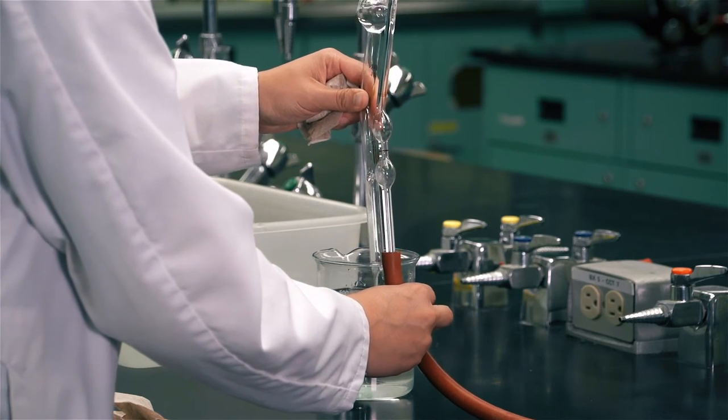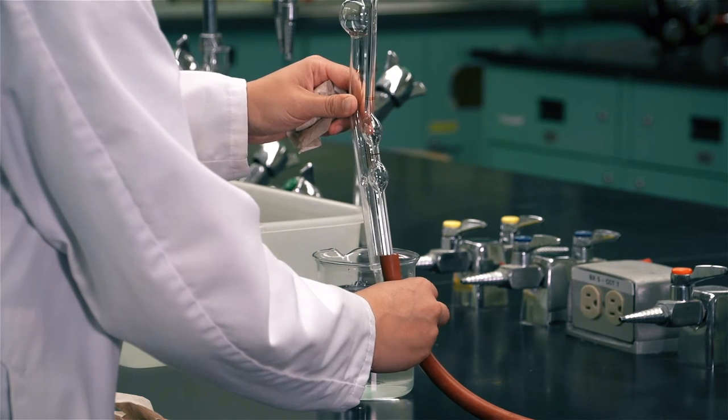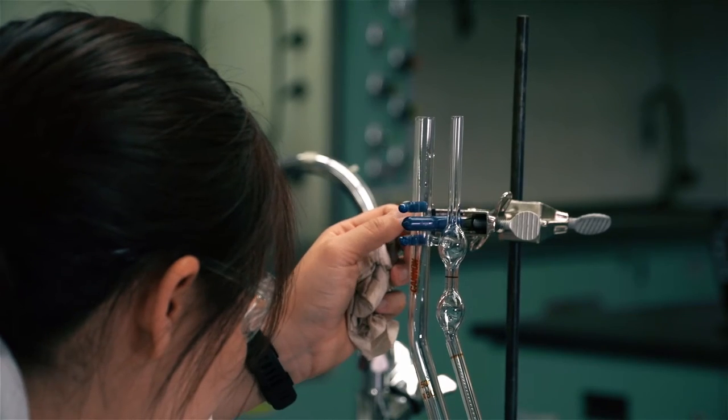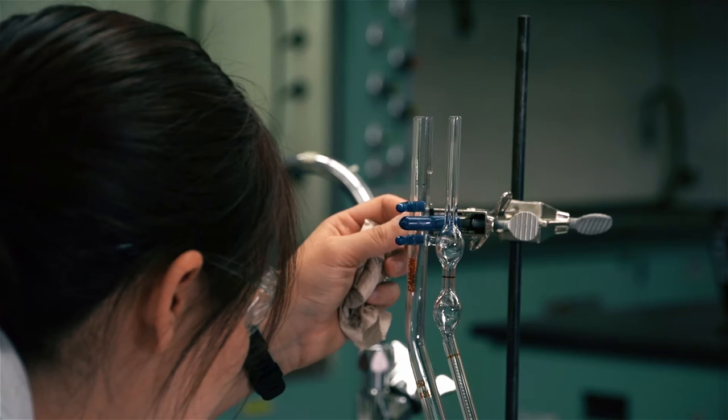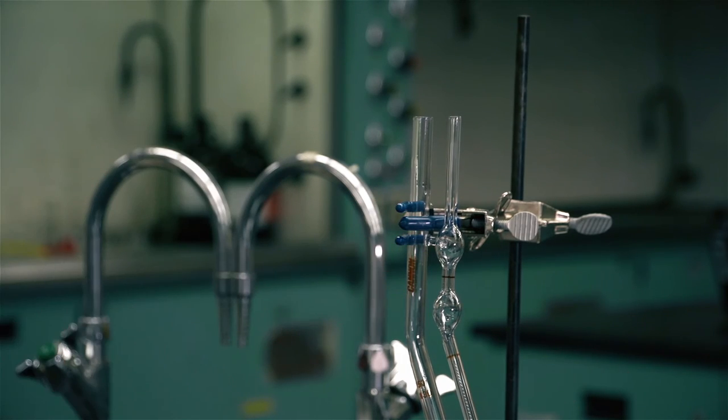Rinse the viscometer with the solution whose flow time is to be determined. Carefully clamp the viscometer on the wide leg just above the bridge in a vertical position.